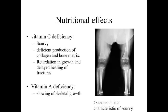Another example is vitamin C deficiency, where we can see scurvy occurring. This is going to contribute to deficient production of both collagen and the bone matrix, causing a weakening in the bone, delay of bone growth, and most predominantly an inhibition of the ability to heal bone fractures. Vitamin A deficiencies are going to cause a slowing of bone deposition, and if they occur during critical periods of growth, you can actually see a slowing of skeletal growth and a reduced stature of an individual.